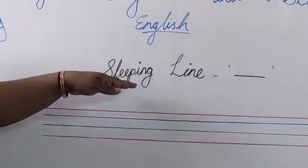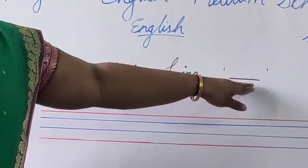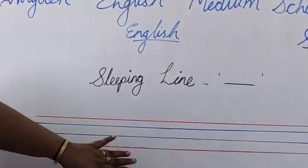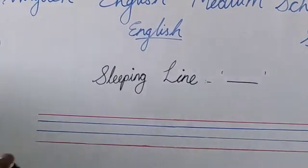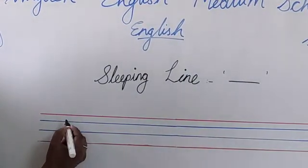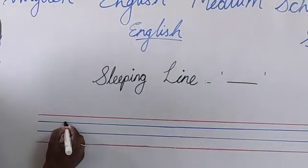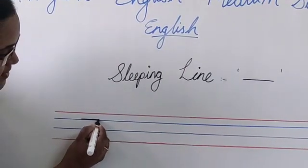Now, let us see how to write a sleeping line on these four lines. We can write sleeping line on the first blue line. Like this.